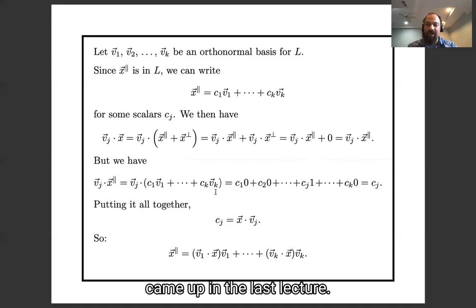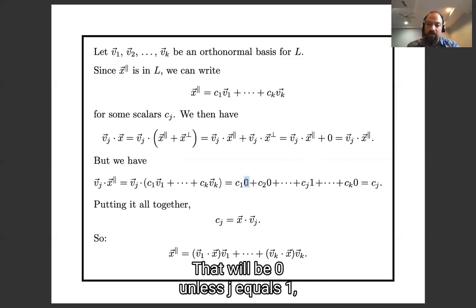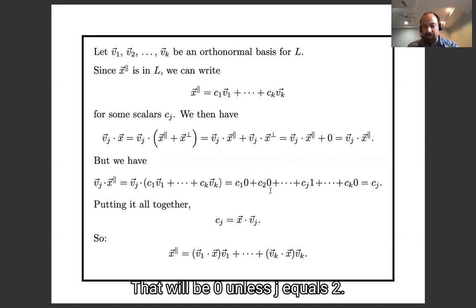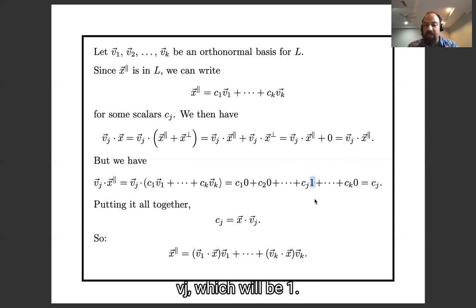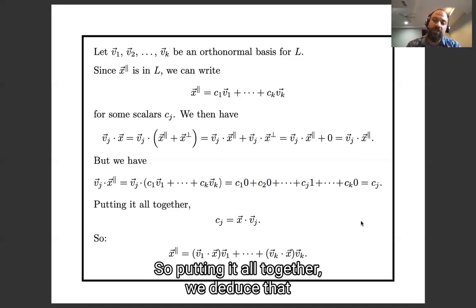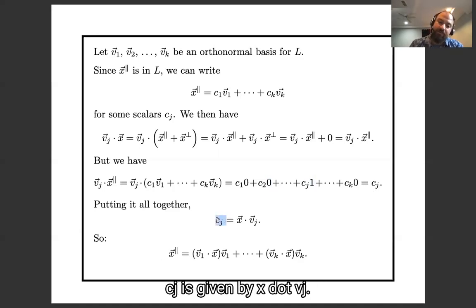And then this is a trick that came up in the last lecture when I distribute this out. We're going to get vj dot v1, that'll be 0 unless j equals 1. We'll get vj dot v2, that will be 0 unless j equals 2. The only non-zero term here will be vj dot vj, which will be 1. And so this dot product is cj. And so putting it all together, we deduce that cj is given by x dot vj.